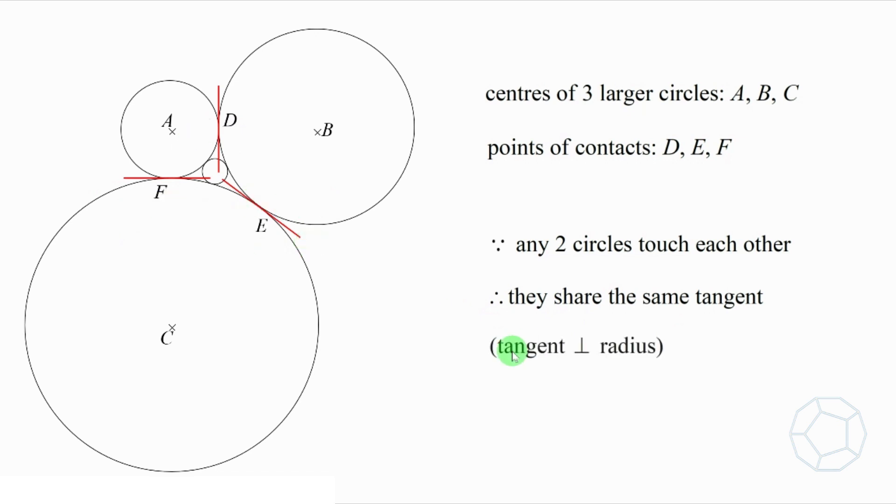Using the reason tangent perpendicular to the radius, we can say that A, D, B, B, E, C and C, F, A are all straight lines. So we have constructed the triangle A, B, C.